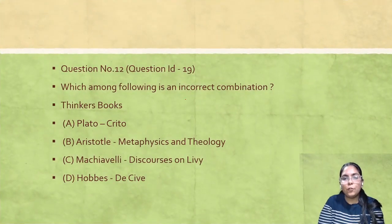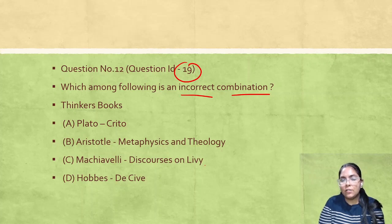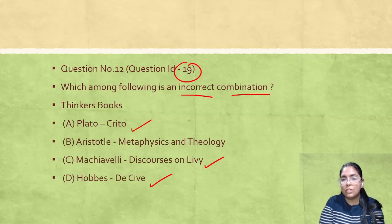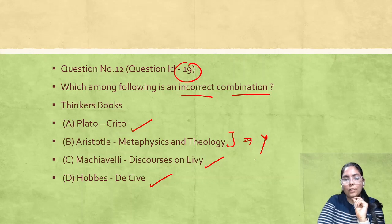Question ID 19: Which of the following is an incorrect combination? Machiavelli–Discourses on Livy is correct; Hobbes–Leviathan is correct; Plato–Republic is correct. But Aristotle–Metaphysics and Theology is the wrong combination. So the answer is option B.